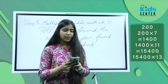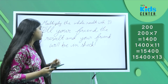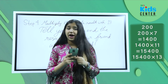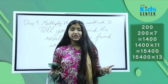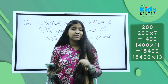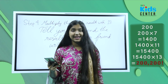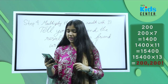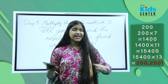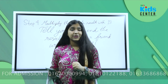Now tell your friend the result and your friend will be in shock! You should do this mentally — I'm only using the calculator to show you that the answer matches. My answer is 200,200 — that means you get 200, a comma, and then 200 again. That's how I usually say it.